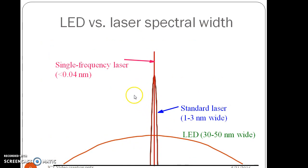Here we can compare LED and a laser for its spectral width. The LED has a broader spectral width such as 30 to 50 nm wide, whereas a laser has a narrow spectral width which is in the range of 1 to 3 nm.